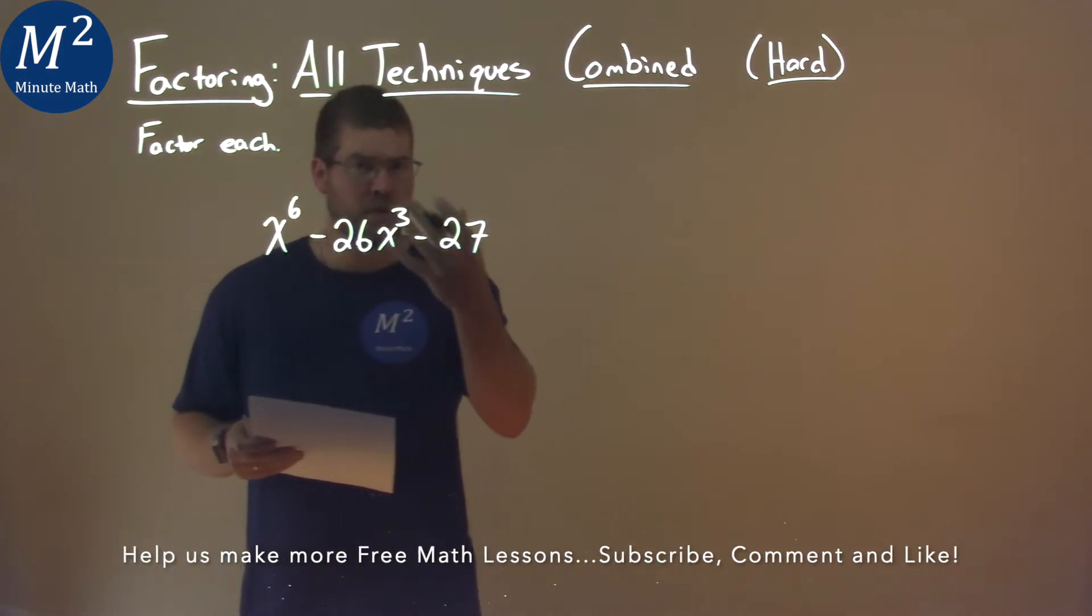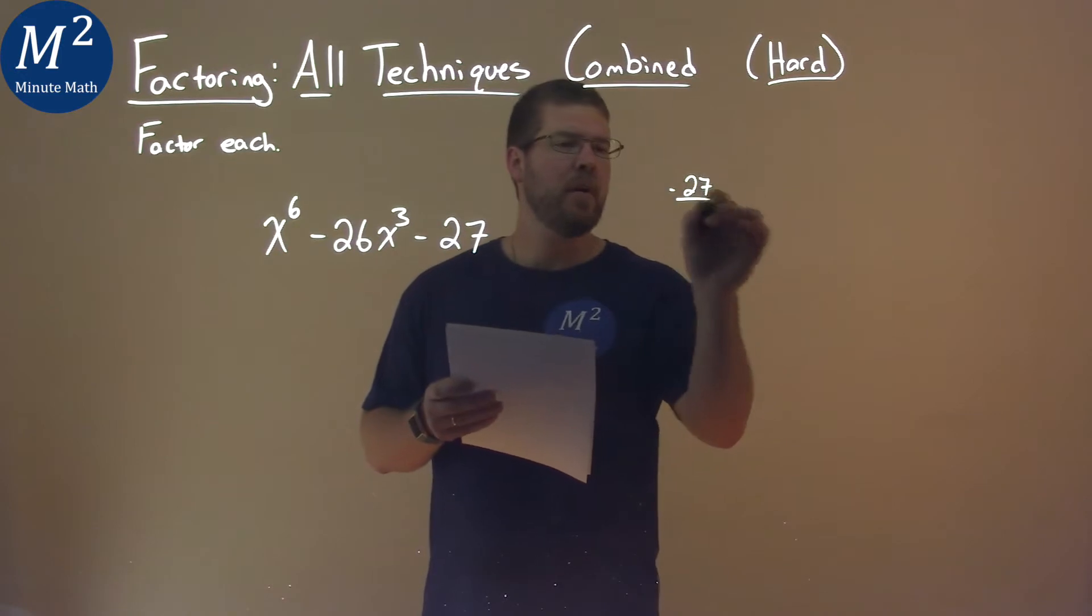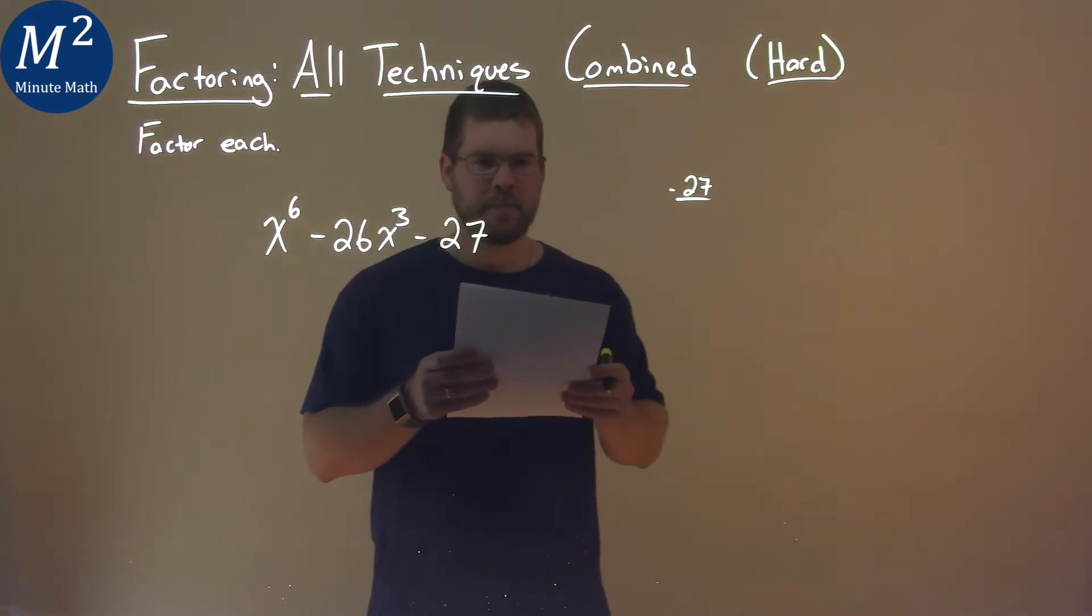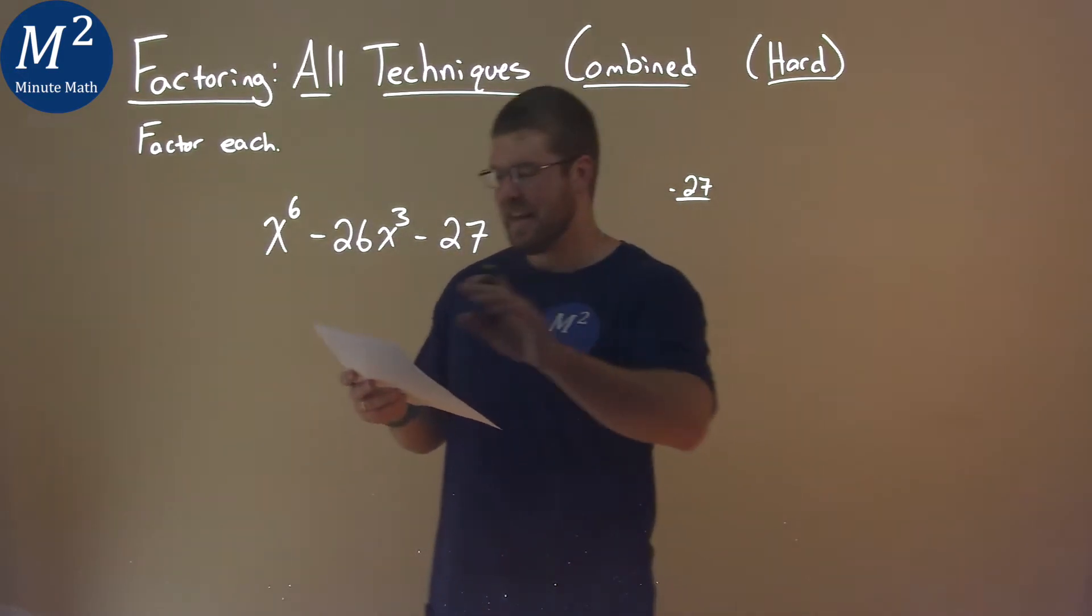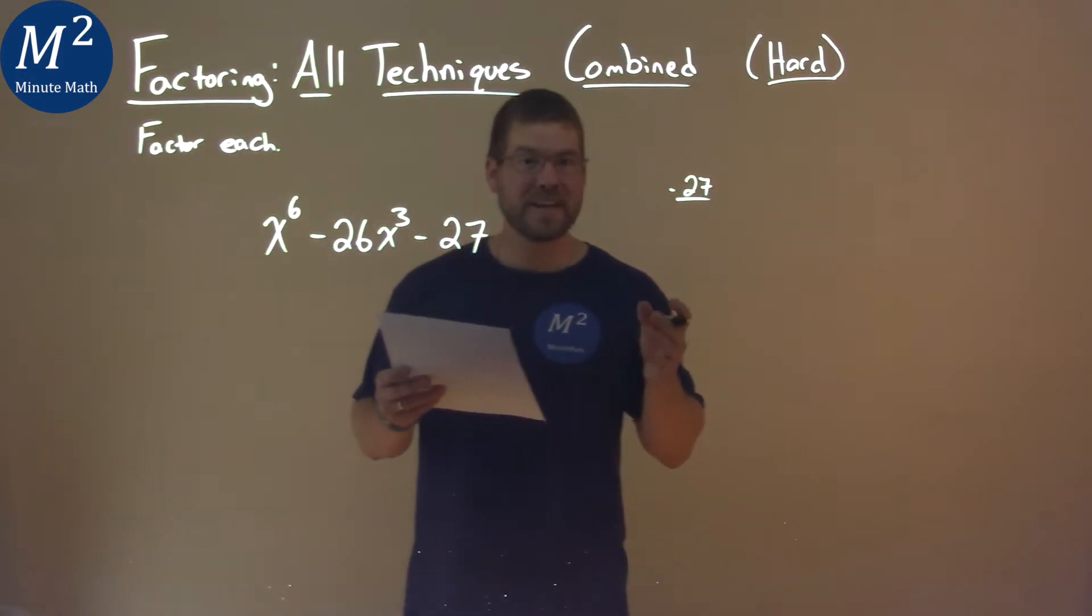Well, we can see that this is in quadratic form, so we take our c value, negative 27, and we find two numbers that multiply to be negative 27 and add to be negative 26. And that one's actually kind of easy.